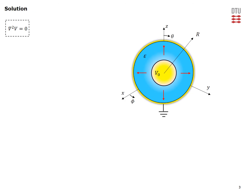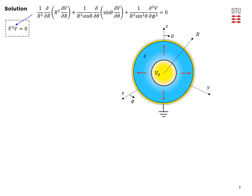Because our dielectric is devoid of any charges — there are no sources in the dielectric material — the appropriate equation for the potential is of course the Laplace equation. Since we are dealing with a spherical geometry, we use the Laplacian in spherical coordinates. This is the explicit expression for Laplace's equation in spherical coordinates. However, since the potential doesn't vary with theta or phi, those terms vanish, and the potential satisfies only the first radial term of the Laplacian.